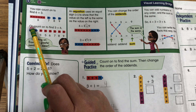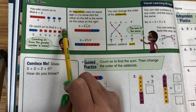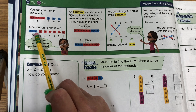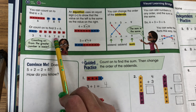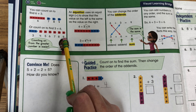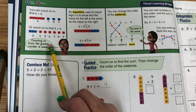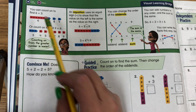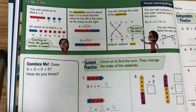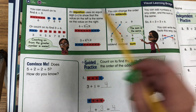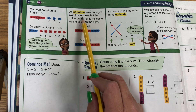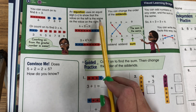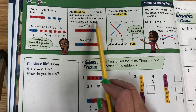9. Or you can count to find 3 plus 6. Start with 3 blue blocks: 4, 5, 6, 7, 8, 9. Counting from the greater number is easier. If you pick the larger number to start with, you'll find that it's easier to count. An equation uses an equal sign to show that the value on the left is the same as the value on the right.